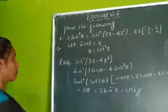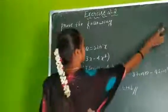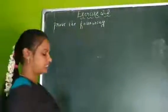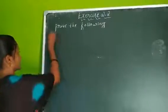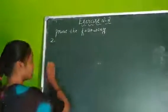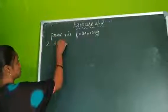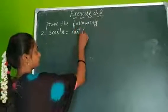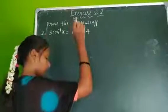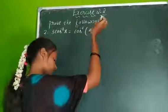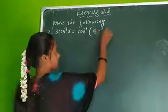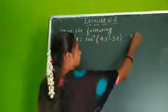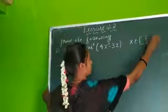Now for the second one, which uses the cos 3 theta formula. We need to prove: 3 cos inverse x = cos inverse (4x cube minus 3x), when x lies in the closed interval [1/2, 1].